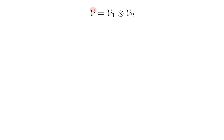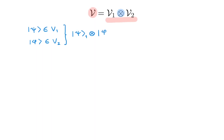We write the tensor product space V of the two spaces V1 and V2 using the tensor product symbol. The state space V is a tensor product space if for every pair of states |ψ⟩ in V1 and |φ⟩ in V2 there is a corresponding state in V, which we denote by the tensor product of |ψ⟩₁ with |φ⟩₂. In this notation, the order in which terms are written in the tensor product doesn't really matter because the subindex already identifies which state space they belong to.